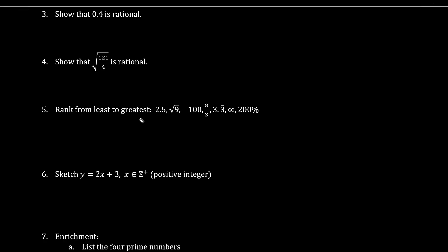Let's rank these numbers from least to greatest. The least number here is negative 100. It's the only negative number. Now the greatest number is infinity because nothing is greater than infinity. But what we have here for 200% is just the same thing as 2 or 2.0.